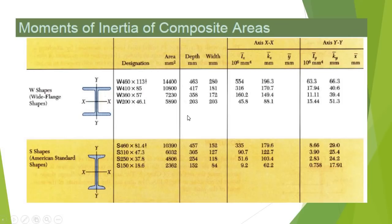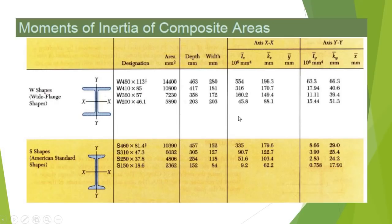We have shown a sample table where moment of inertia and radius of gyration are useful. This information is useful when designing columns or beams. The concept of moments of inertia is very important in steel design, concrete design, and others.